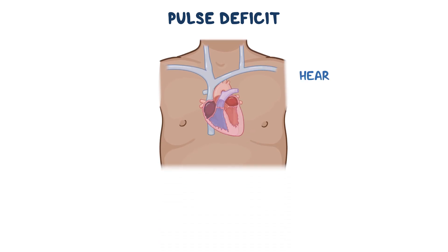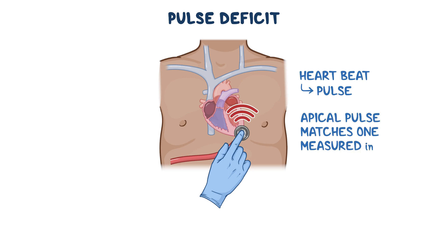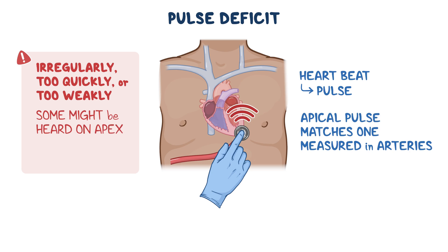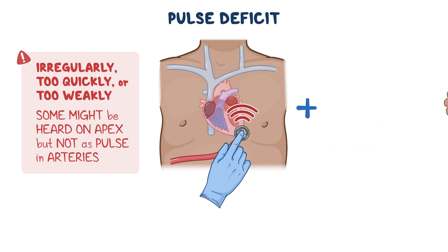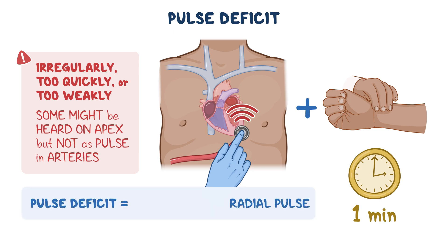Normally every heartbeat produces a pulse, so the apical pulse matches the one measured in the arteries. However, if the heart beats irregularly, too quickly, or too weakly, some heartbeats may be heard at the apex but not felt as a pulse in the arteries. This can be assessed by having one healthcare worker measure the apical pulse with a stethoscope and another measure the radial pulse simultaneously for one minute. To find the pulse deficit, subtract the radial pulse from the apical pulse.